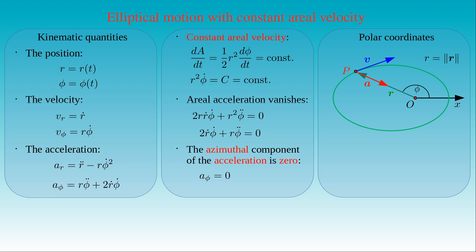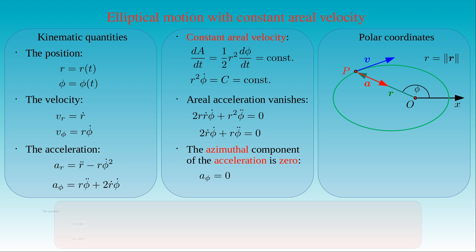Now we can present the equations of motion for elliptic orbits with constant aerial velocity. The position of the body is still given by the radial coordinate R and the azimuthal angle phi as functions of time. As already stated, the radial coordinate can be expressed in terms of the polar angle by the polar equation. This expression is the trajectory equation of the orbiting body.